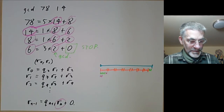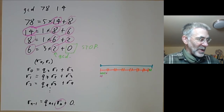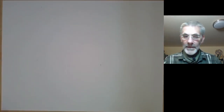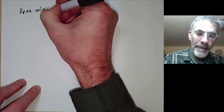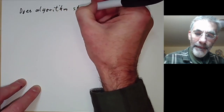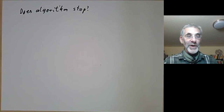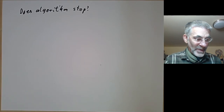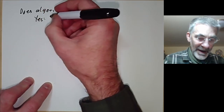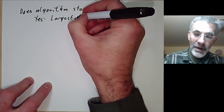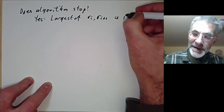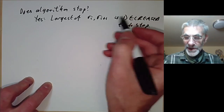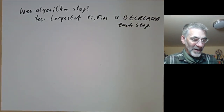We should check that the algorithm actually works. We need to check several things. First, does it stop? If you've ever done computer programming you'll have encountered programs that never stop due to a bug. The algorithm does stop because the largest of rᵢ and rᵢ₊₁ is strictly decreased at each step — we start with positive integers that keep getting smaller, and that can't go on forever.